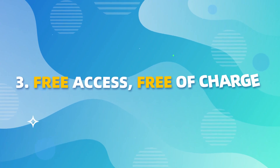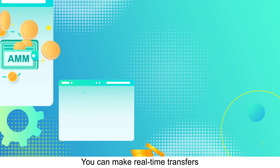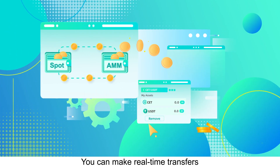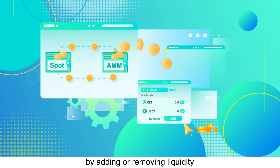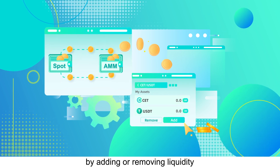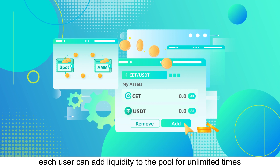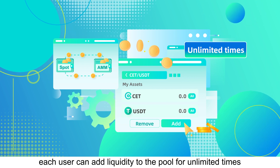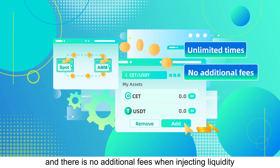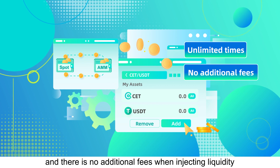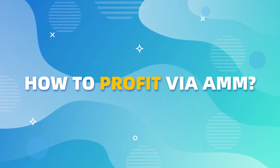Three: free access, free of charge. You can make real-time transfers between your spot account and AMM account by adding or removing liquidity. In every single market, each user can add liquidity to the pool an unlimited number of times and there are no additional fees when injecting liquidity.